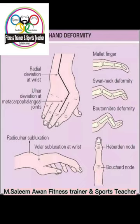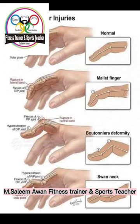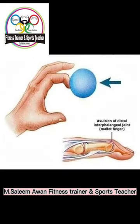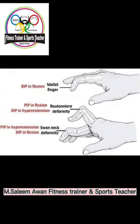Let us see some peculiarities of the first metacarpal bone. It is the shortest and stoutest metacarpal. It is rotated medially through 90 degrees so that the dorsal surface faces laterally. Its base has a concavo-convex saddle-shaped articular surface, making it a saddle variety of synovial joint, and it articulates with the trapezium to form a saddle joint.